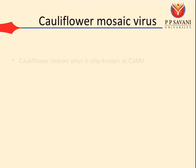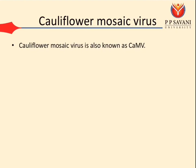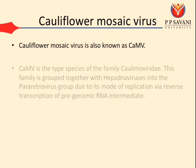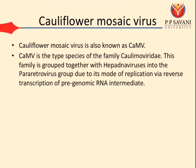Cauliflower Mosaic Virus is also known as CaMV. It is a type species of family Caulimoviridae. This family is grouped together with Hepadna Virus into the Pararetrovirus group due to its mode of replication via reverse transcription of pre-genomic RNA intermediate.